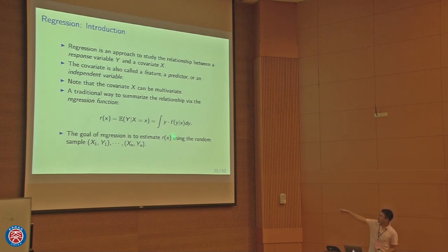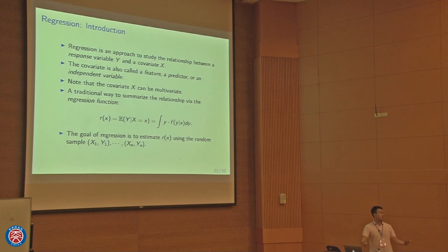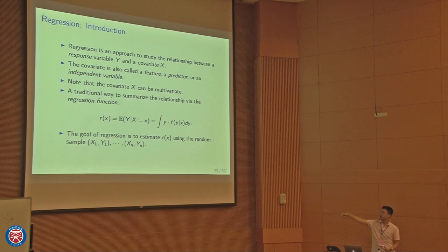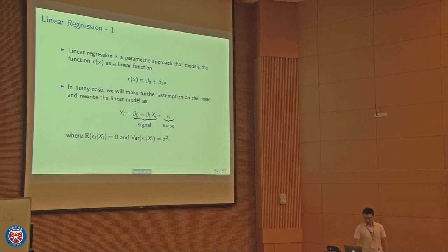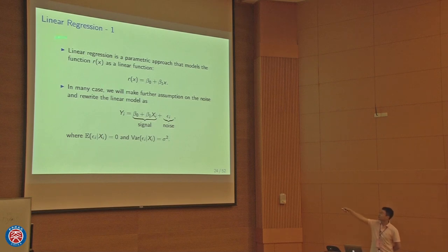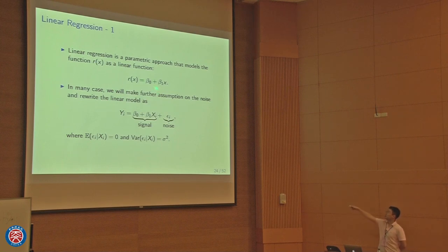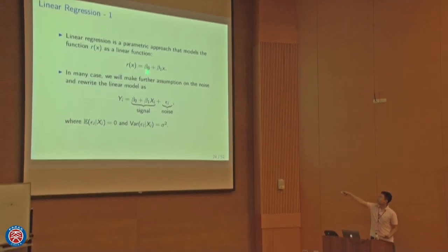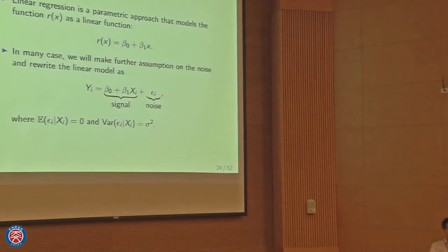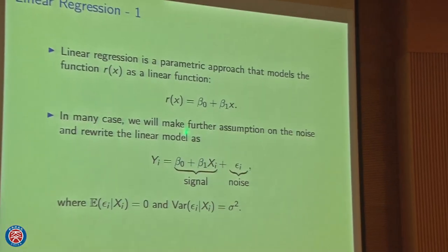The simplest approach — which most of you will have heard of — is linear regression. Basically, linear regression assumes the regression function can be written as a linear model: beta_0 + beta_1 * x. It's a linear curve, and beta_0 and beta_1 completely determine how the regression function looks. Sometimes people additionally assume the model yi = beta_0 + beta_1*xi + epsilon_i, where epsilon_i is noise with mean zero given the covariate and variance sigma-squared.